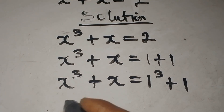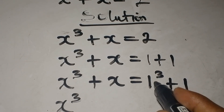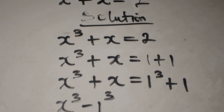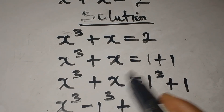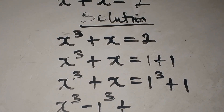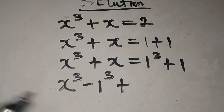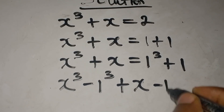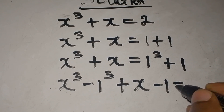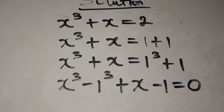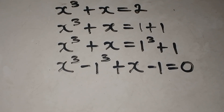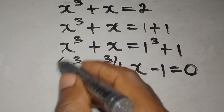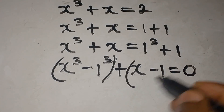But we need more than one solution, so we need to continue. x to the power of 3 becomes x cubed minus 1, and then plus x minus 1, which gives us zero on the right hand side. We're going to factorize these two parts separately.